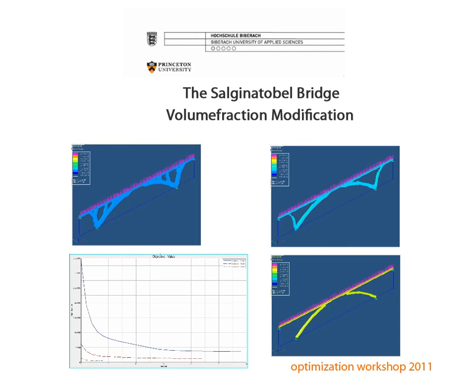The volume fraction ratio as an optimization design constraint defines the proportion of material to be introduced into the design space. This study with decreasing volume fraction ratios shows how the structures become more and more thinned out, with only the arch remaining as the determining structural element. Consequently, the compliance value reached by the optimization increases with decreasing volume fraction.